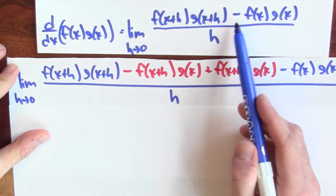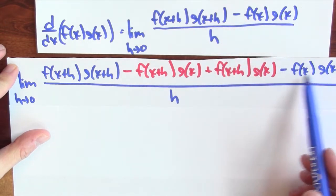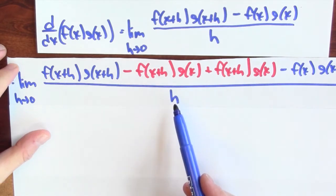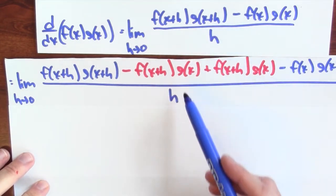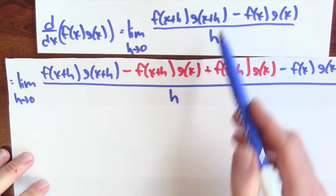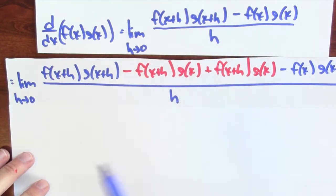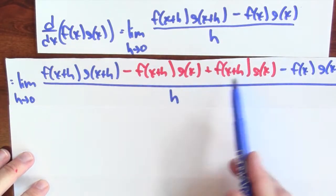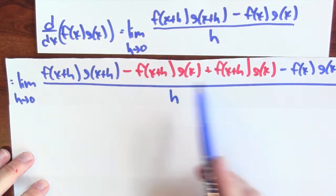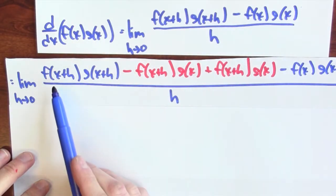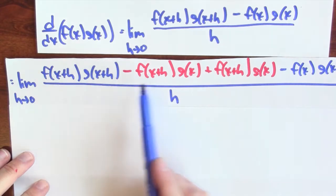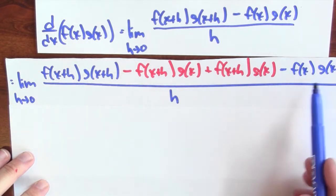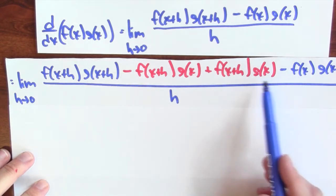And I subtract f(x)·g(x), still dividing by h. So these are the same limits — I haven't really done anything, but I've actually done everything I need. By introducing these extra factors, I've now got a common factor of f(x+h) in the first two terms, and a common factor of g(x) in the remaining terms.